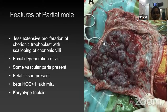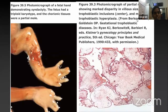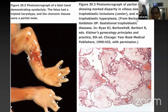Features of partial mole: there will be proliferation of chorionic trophoblast but less extensive compared to complete mole. Scalloping of chorionic villi and focal degeneration of villi will be seen. Some vascular parts will be present and fetal tissue will be present. Beta HCG will be less than 1 lakh milli-international units per liter. Karyotype will be triploid. The picture on the left shows the fetal hand demonstrating syndactyly; this fetus had a triploid karyotype. The picture on the right shows the histopathology of partial mole with marked disparity in villus size, trophoblastic inclusions, and mild trophoblastic hyperplasia.